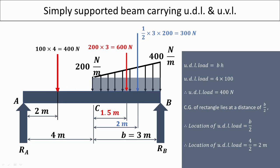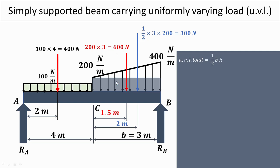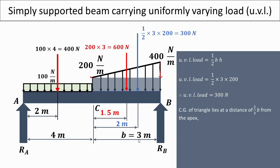The remaining load is the triangular distribution — a uniformly varying load from 0 to 200 Newton per meter. The area equals one half base into height, where base is 3 meters and height is 200, giving 300 Newton. The centroid of the triangle lies at two-thirds of the base from the apex: two-thirds into 3 equals 2 meters. This is indicated by the blue arrow of 300 Newton acting at 2 meters.